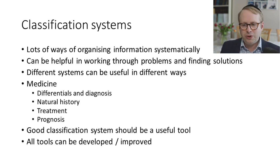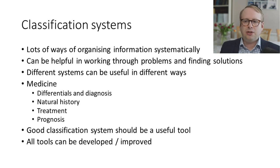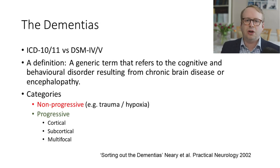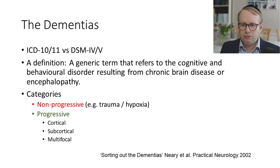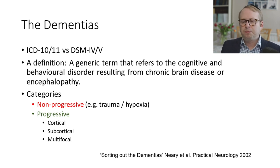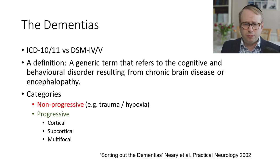With all tools, they can always be developed and improved, and sometimes you need a very specific tool for a very specific job. In terms of the dementias, there are multiple ways of trying to classify them — whether ICD-10/11, DSM-4/5, and so on. I personally really enjoy the definition from 'Sorting Out the Dementias' by Neary and colleagues, which refers to the cognitive and behavioural disorder resulting from chronic brain disease or encephalopathy. In this 2002 paper he categorised dementias as either non-progressive or progressive — non-progressive ones being things like trauma and hypoxia, and progressive ones being cortical, subcortical, and multifocal.